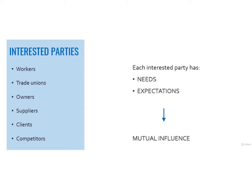So far, we made some examples: workers, trade unions, owners, suppliers, clients, competitors. For all these parties, we can imagine their needs — what do they ask your company regarding OHS — their expectations, and what they expect to receive from your company, even without ever asking for it in an explicit way. Overall, we have to think of all the different ways there could be a mutual influence.